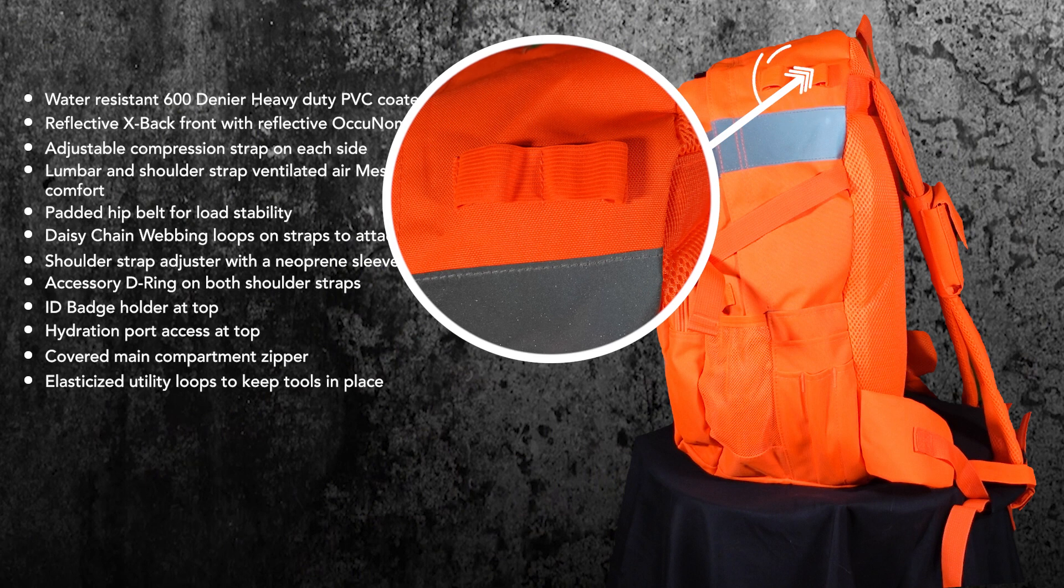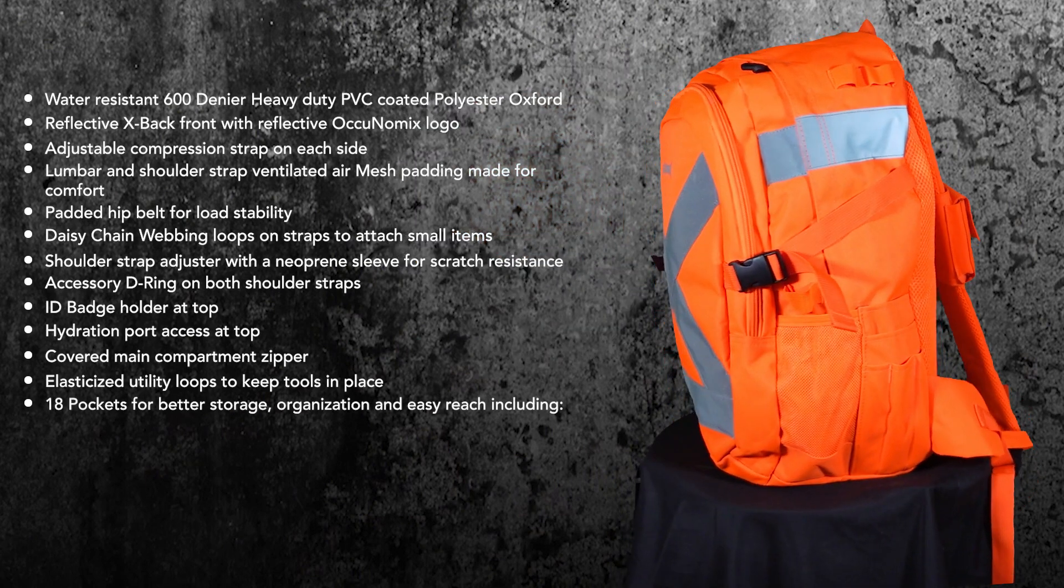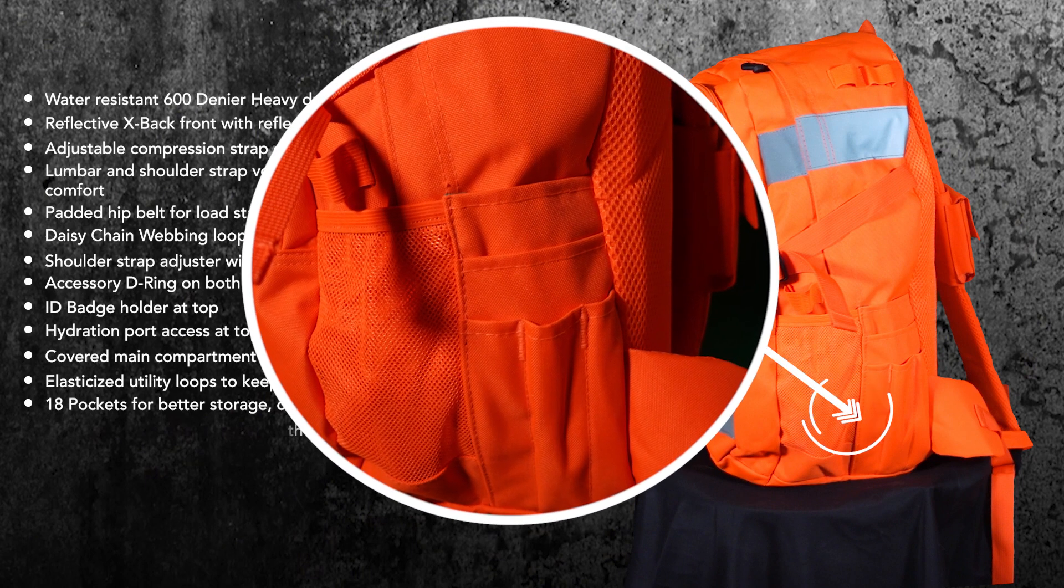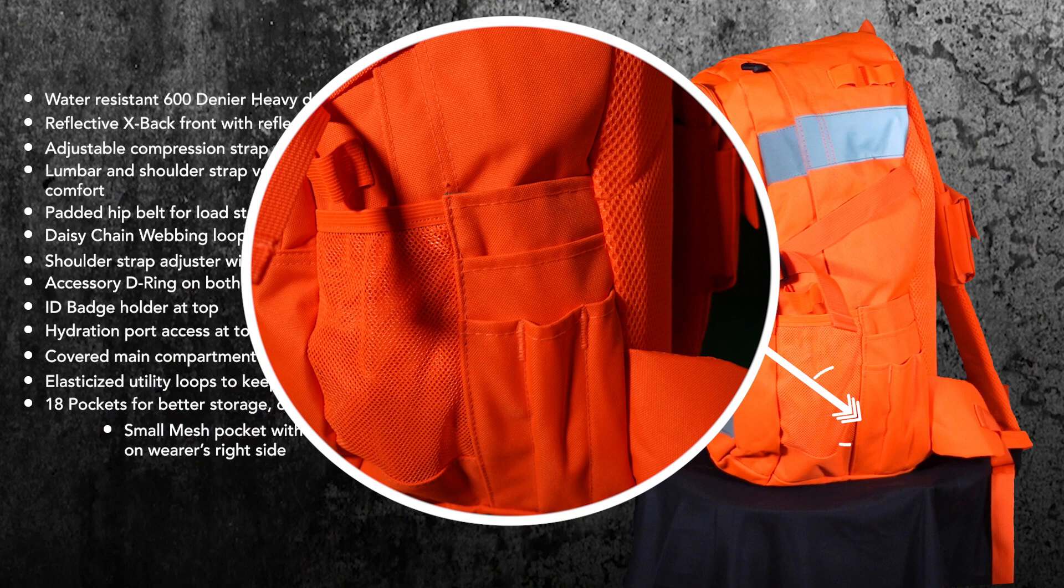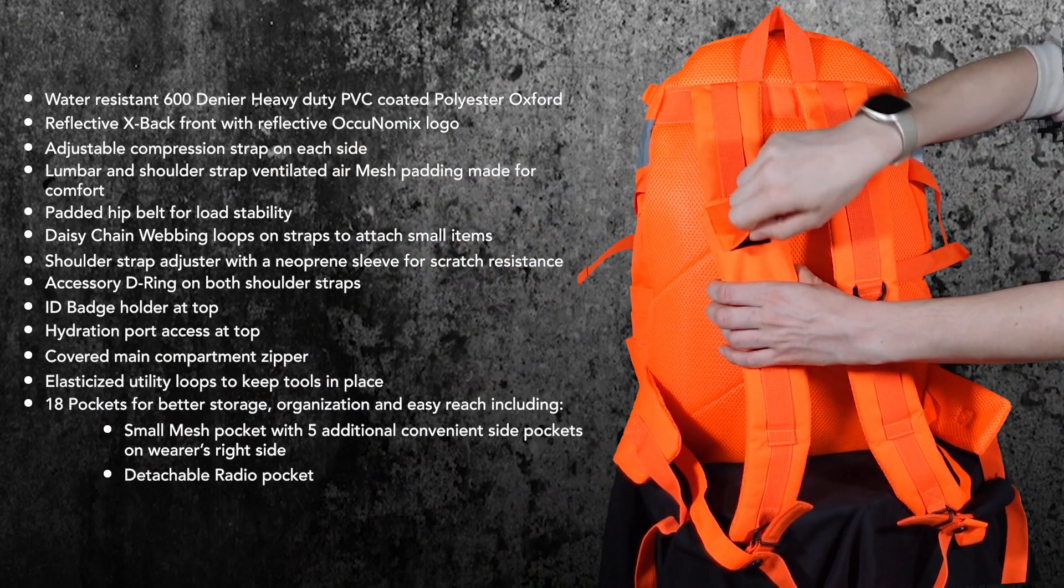Elasticized utility loops to keep tools in place. 18 pockets for better storage, organization, and easy reach including a small mesh pocket with 5 additional convenient side pockets on wearer's right side. A detachable radio pocket.